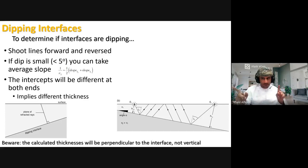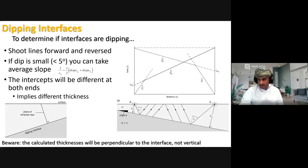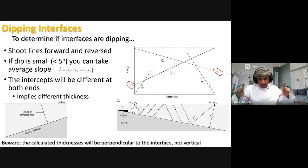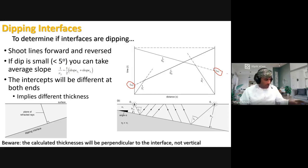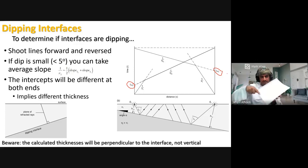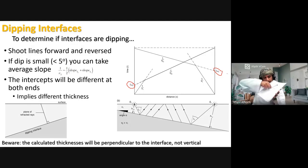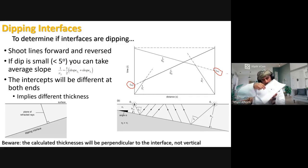From each intercept you get a different depth or thickness of the first layer. Working out these two dips you can tell how the layer is dipping, which direction is up-dip and which is down-dip. However, if the true dipping direction is at an angle to your survey line, the dip you measure along the line is an apparent dip — not the true dip, which lies along the steepest direction.